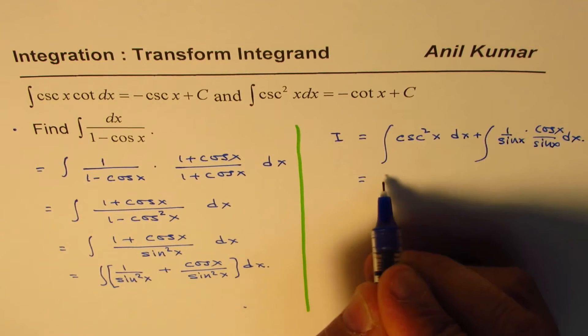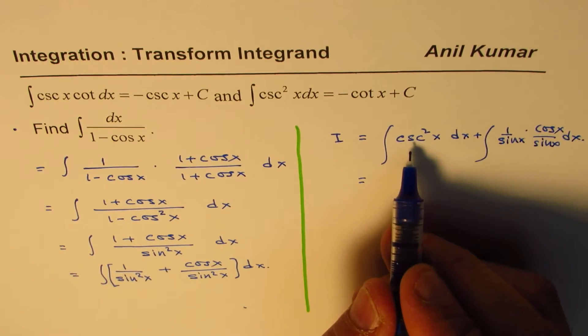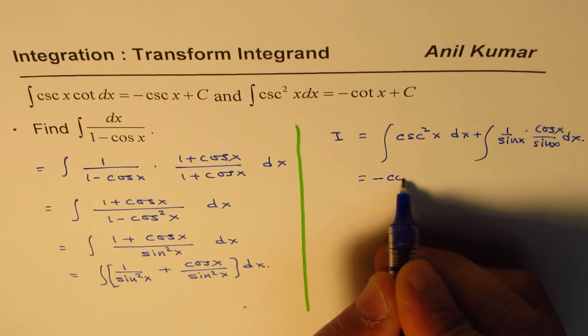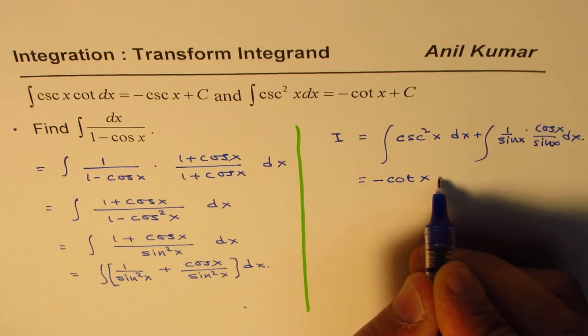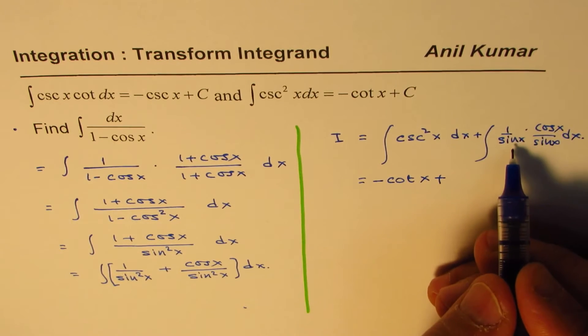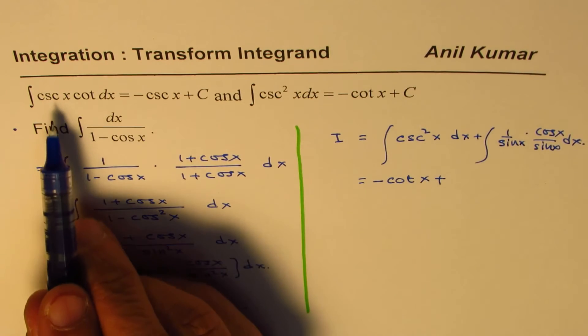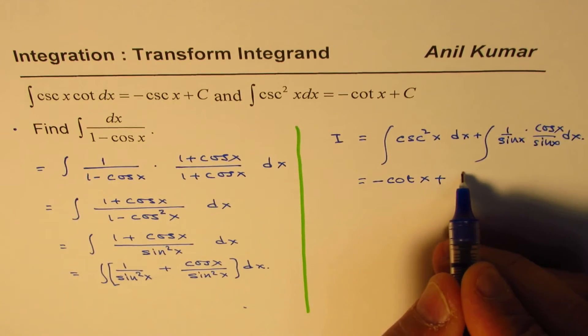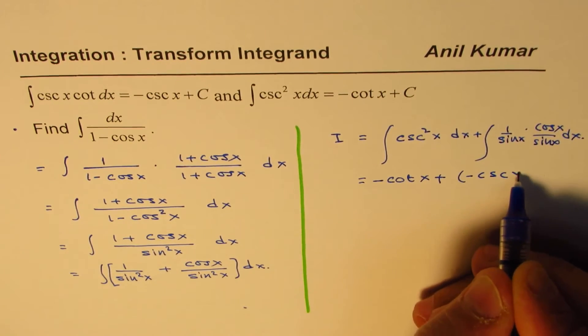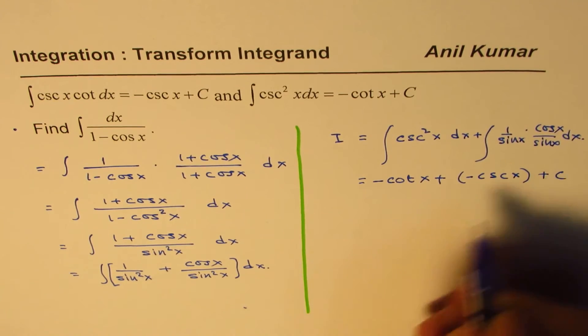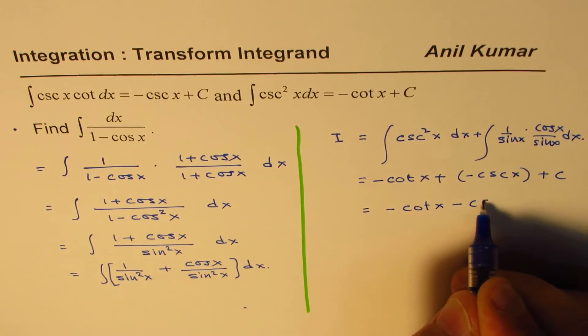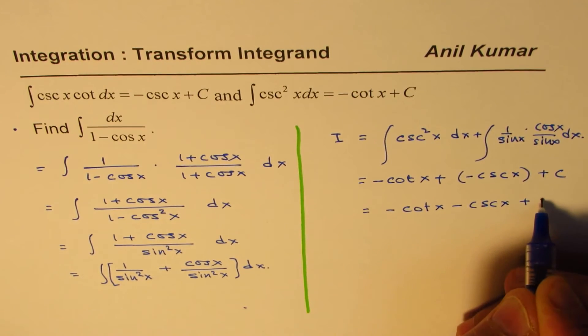So that gives you, integral of this is minus cot x plus 1 over sine x is cosecant x, that is cot x, so the integral is minus cosecant x plus c. So that's what you get. So our answer is minus cot x minus cosecant x plus c.